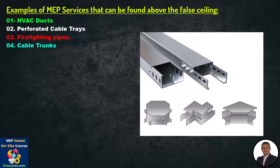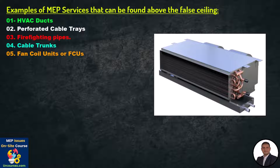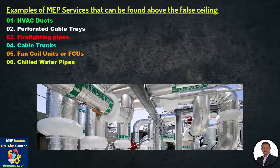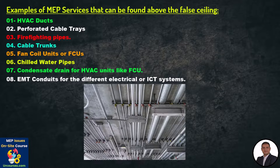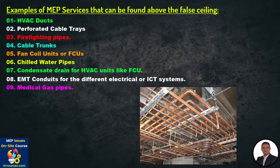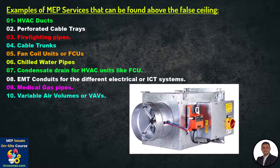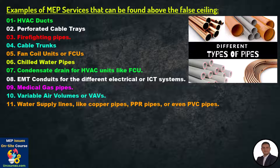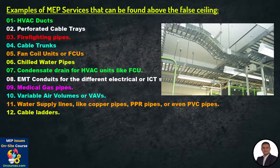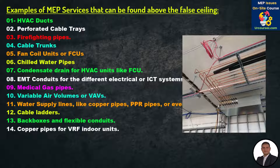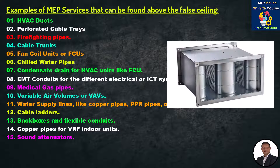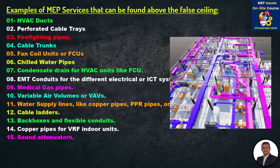4) cable trunks, 5) fan coil units or FCUs, 6) chilled water pipes, 7) condensate drain for HVAC units like FCUs, 8) EMT conduits for different electrical or ICT systems, 9) medical gas pipes, 10) variable air volumes or VAVs, 11) water supply lines like copper pipes, PPR pipes, or PVC pipes, 12) cable ladders, 13) back boxes and flexible conduits, 14) copper pipes for VRF indoor units, 15) sound attenuators.